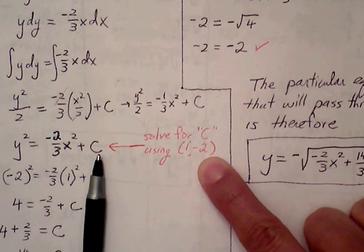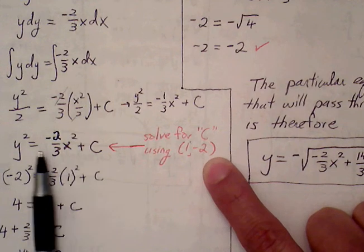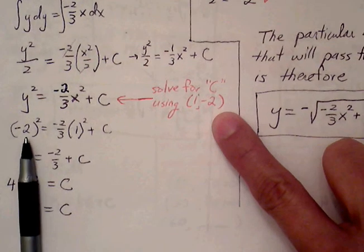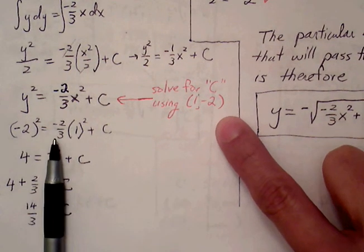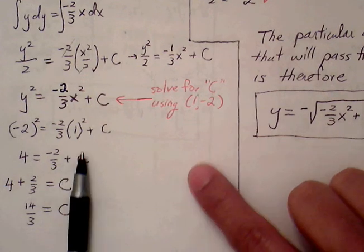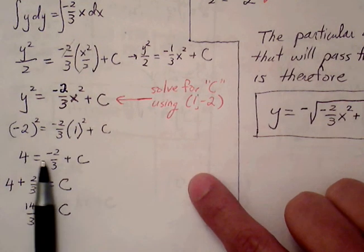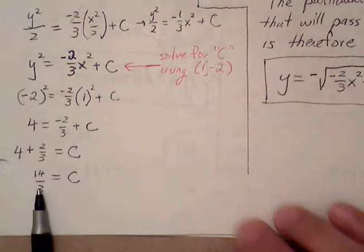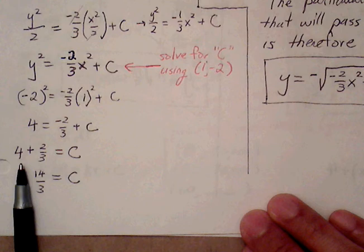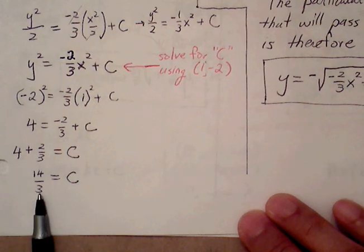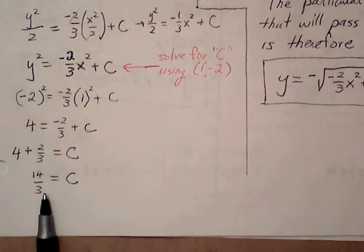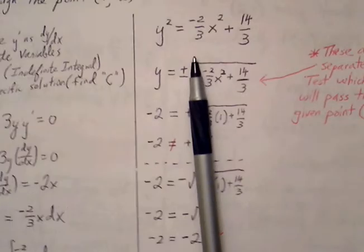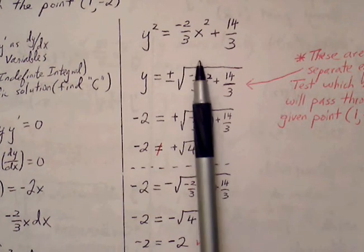The ordered pair in the problem is (1, negative 2). So 1 plugs in for x and negative 2 plugs in for y. We get: negative 2 squared equals negative 2/3 times 1 squared plus c. So we get 4 equals negative 2/3 plus c. Adding 2/3 to both sides: 4 is the same as 12/3, so 12/3 plus 2/3 gives us 14/3. So c equals 14/3, and we're left with y squared equals negative 2/3 x squared plus 14/3.